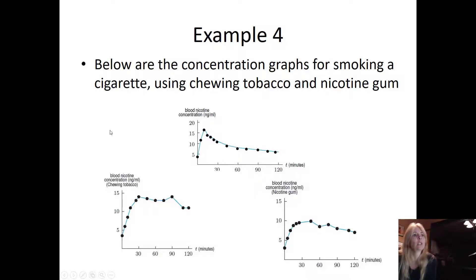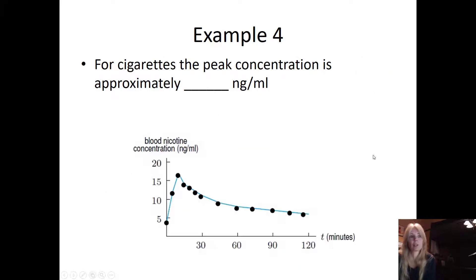This is a homework question. Below are the concentration graphs for smoking a cigarette, chewing tobacco, and nicotine gum. You can kind of see that these all look the same—you have that first part of the drug going straight into your body, and then it starts to come out of your body. These are drop-down menus.